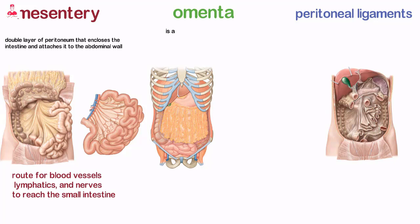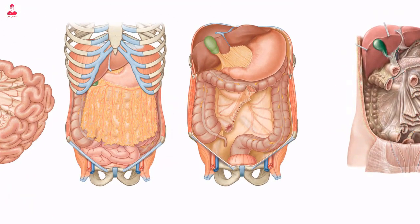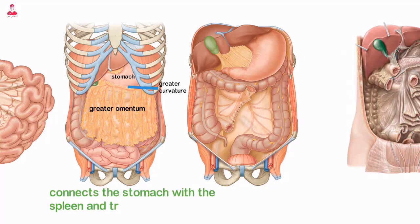An omentum is a mesentery or double layer of peritoneum that is attached to the stomach. The normal omentum is usually imperceptible on routine scans, visible only when fluid is present. The greater omentum is a fat-laden fold of peritoneum that drapes down from the greater curvature of the stomach and connects the stomach with the spleen and transverse colon, whereas the lesser omentum attaches the duodenum and lesser curvature of the stomach to the liver.